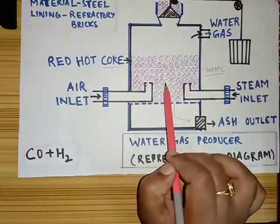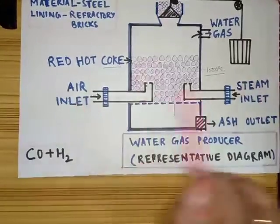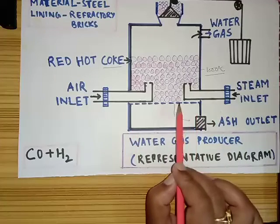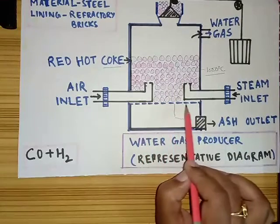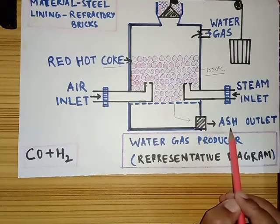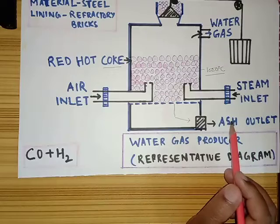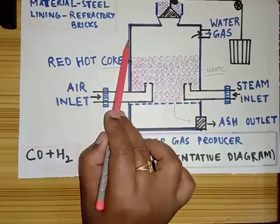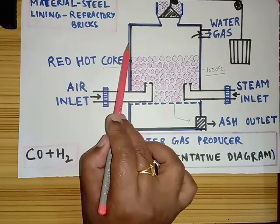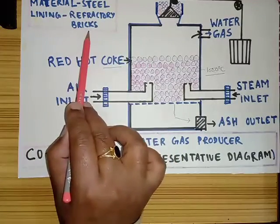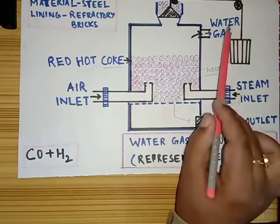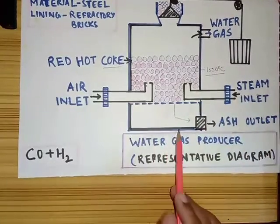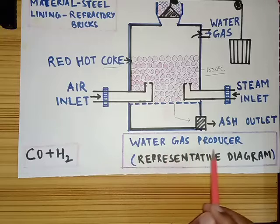This is a pulley. This is the inlet for coke. This is the inlet for air. This is the inlet for steam. This is a grating. Below this grating, the coke or coal, whichever is used, cannot go below this grating. Below this grating, only ash passes, and this is the outlet for ash. The gas producer is made up of steel — the outer material is steel and it is lined inside with refractory bricks, because the temperature of this red hot coke has to be maintained around 1000°C for production of water gas.